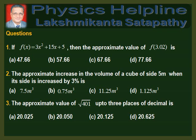Question 2: The approximate increase in the volume of a cube of side 5 meters when its side is increased by 3%. The options are 7.5 meter cube, 0.75 meter cube, 11.25 meter cube, and 1.125 meter cube.